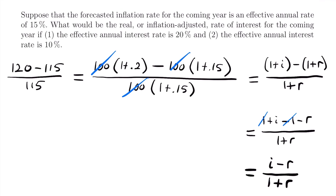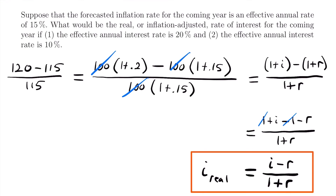That is the formula you need to know to calculate a real rate of interest: i_real = (i − r) ÷ (1 + r). That's all for this lesson on inflation and real rates of interest. If you want to see more example problems using this formula, check out the examples video linked at the end of this video and in the description below. Leave any questions in the comments, and I'll see you next time.